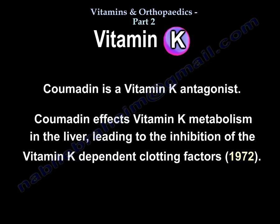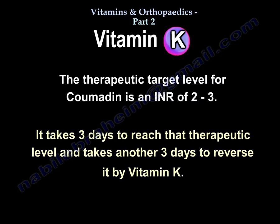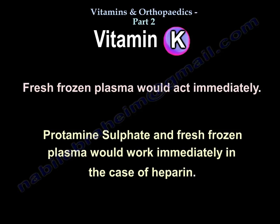Scurvy is a vitamin C deficiency. Coumadin is a vitamin K antagonist. It affects vitamin K metabolism in the liver, leading to inhibition of the vitamin K dependent clotting factors 10, 9, 7, and 2. The therapeutic target level of Coumadin is an INR of 2 to 3. It takes approximately 3 days to reach that therapeutic level, and takes another 3 days to reverse it by vitamin K. Fresh frozen plasma would act immediately on reversing the effects of Coumadin. In the case of heparin, protamine sulfate and fresh frozen plasma would work immediately on reversing its effects.